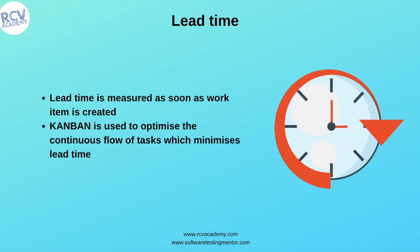The third important thing in Kanban is lead time. Lead time is measured from the moment a work item is created. Kanban is used to optimize the continuous flow of tasks, which minimizes lead time. With the Kanban approach, the key goal is to reduce lead time so that once an item enters the development cycle, it doesn't take long to deliver it.